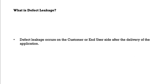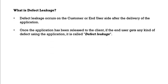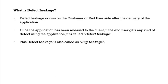What is defect leakage? Defect leakage occurs on the customer or end user side after delivery of the application. Once the application is released to the client, if the end user encounters any defects, that is called defect leakage. A tester may not have noticed the issue, so it went to production — that particular defect was pushed to the production environment and that is how it was leaked. Defect leakage is also called bug leakage.